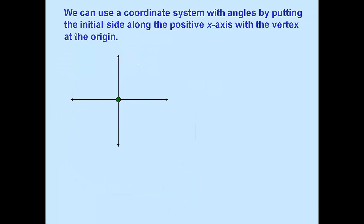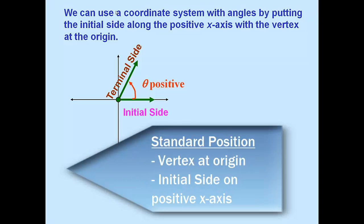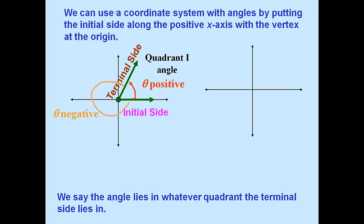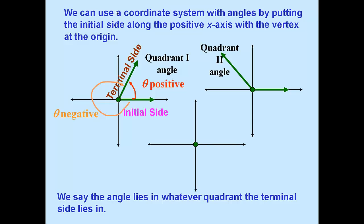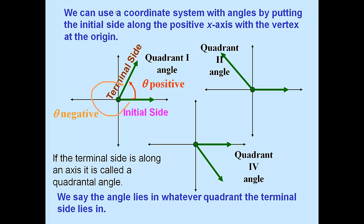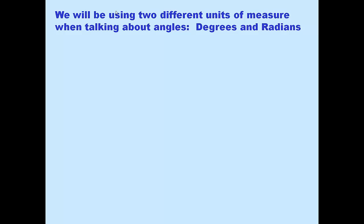If we put an angle into the coordinate system, then we can really start doing a lot with it. Standard position has the initial side on the positive x-axis and vertex at the origin — those are the two things that signify it is in standard position. Because this angle's terminal side is in quadrant two, it's a quadrant two angle. Since its terminal side is in quadrant four, we call it a quadrant four angle. If the terminal side is along an axis, it's called a quadrantal angle.